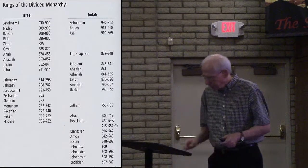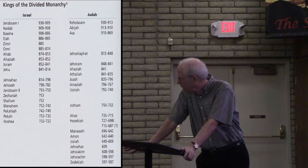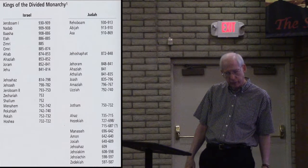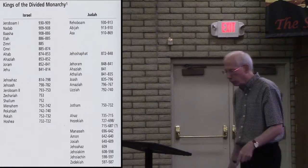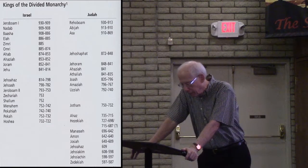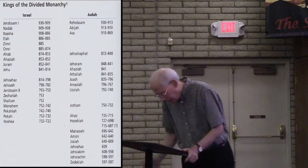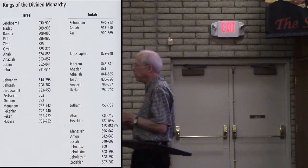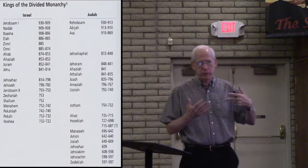Picking back up — Jehoram, the king of Judah, we can situate him at 848 to 841 BC. He was the son of Jehoshaphat, and his wife was Athaliah, the daughter of Ahab and Jezebel.